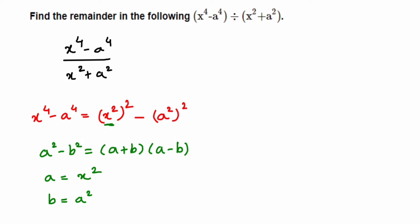Applying the identity, a plus b becomes x squared plus a squared, and a minus b becomes x squared minus a squared. So I have factorized the numerator part using this identity. I hope it's clear how we got this. Now I'm going to substitute back.